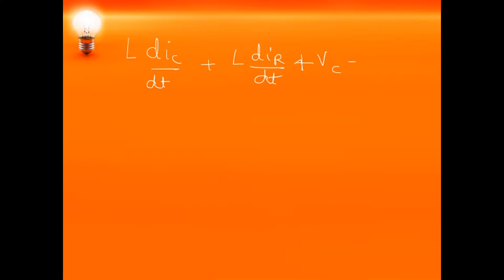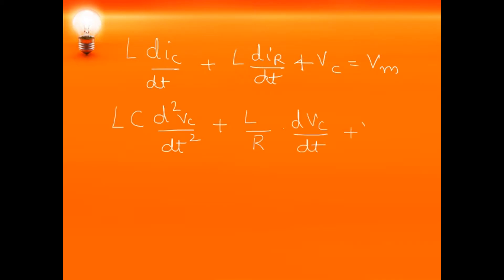Substituting dic/dt and dir/dt back into the equation L·(dic/dt) + L·(dir/dt) + Vc = Vm, we get: L·C·(d²Vc/dt²) + (L/R)·(dVc/dt) + Vc = Vm. This is in the time domain, so we apply the Laplace transform to convert it to the frequency domain and find the value of R.